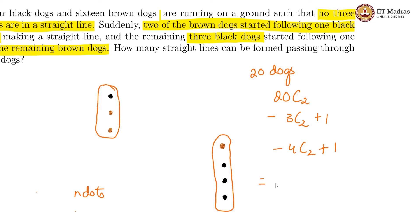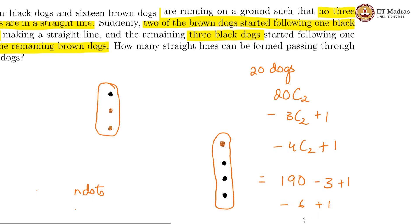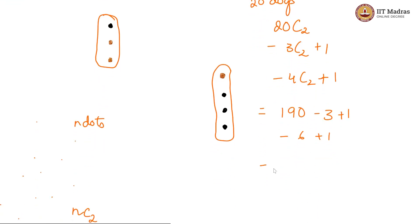So we now have 20C2 is 190 minus 3C2 is 3 plus 1 minus 4C2 is 6 plus 1. So we get 190 minus 9 plus 2, which is equal to 183.